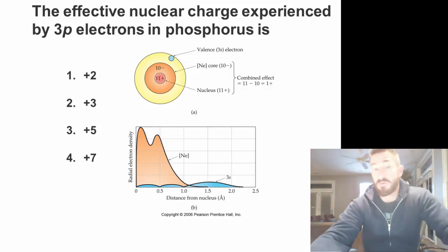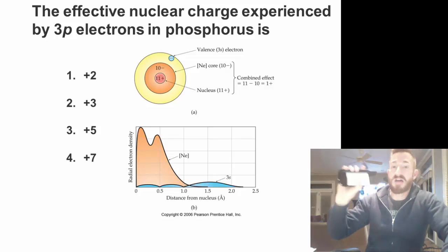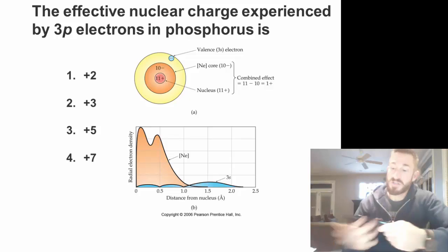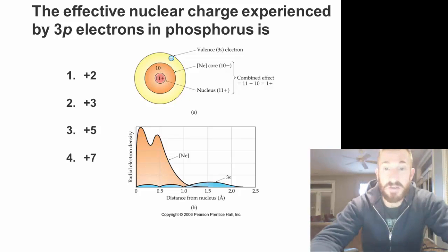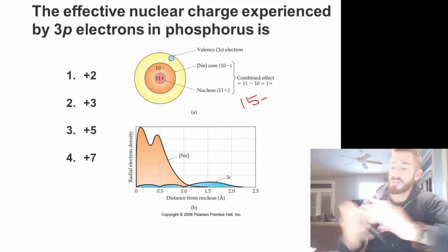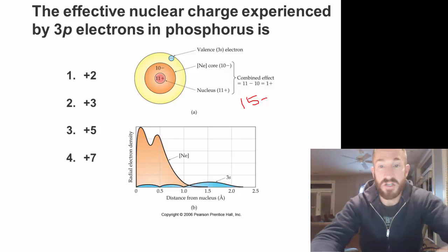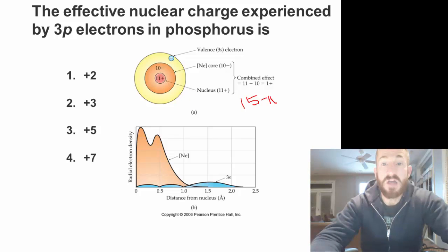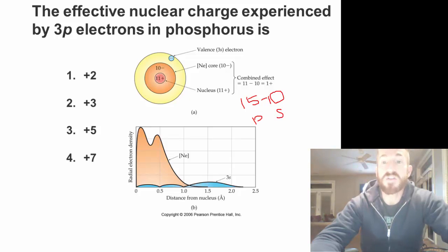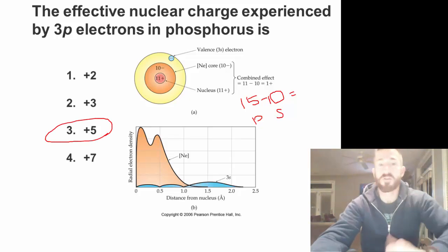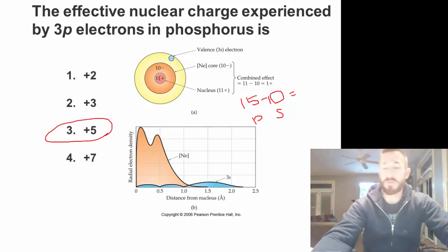Let's figure out effective nuclear charge for a random atom — let's pick phosphorus. Look at your periodic table and find the atomic number, which is the number of protons. Phosphorus is atomic number 15. Then we look at the number of core or shielding electrons. The previous noble gas before phosphorus is neon, which has 10 electrons. So we subtract 10 from 15, and the effective nuclear charge is positive 5.